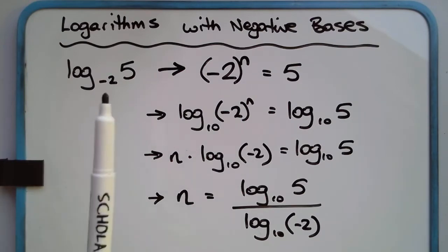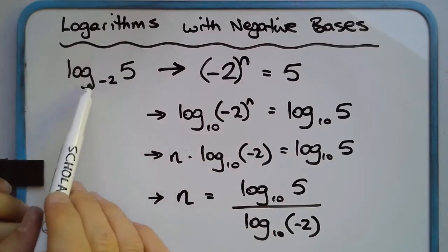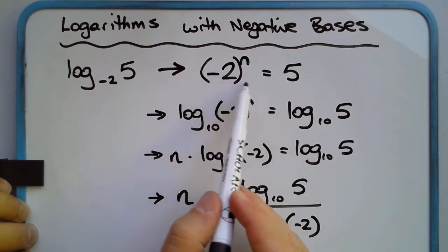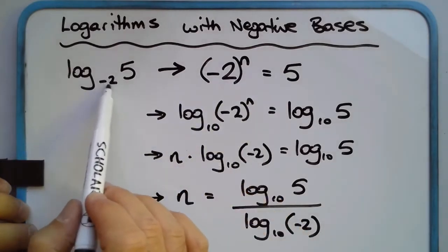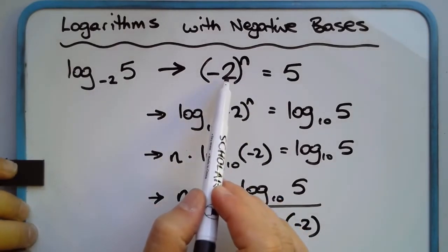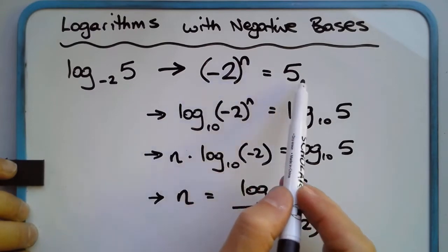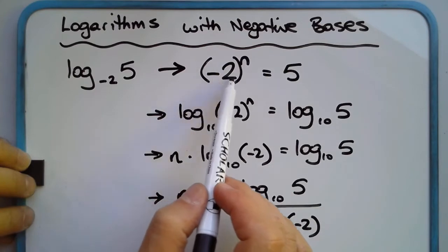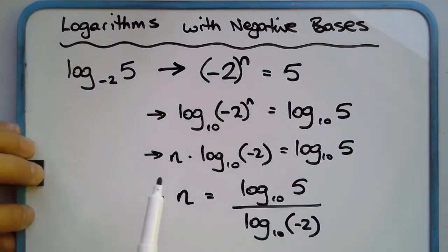When the base is positive and the number inside the logarithm is positive, no problem, it'll work. We can find a solution to that, and we can find an index that'll work. So let's have a look at log base negative 2 of 5, and we can rewrite this in exponential form. So if the base is negative 2, this can be written as negative 2 to the power of n equals 5. The question is, can we find an n so that when you raise negative 2 to that power, we're going to get 5?